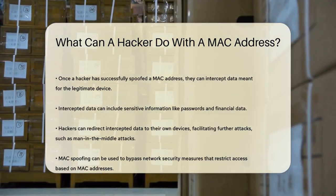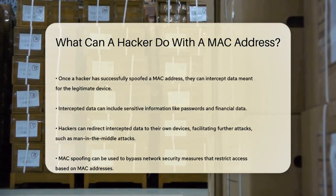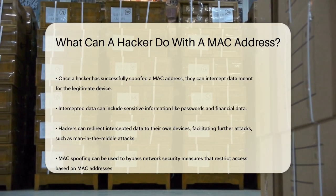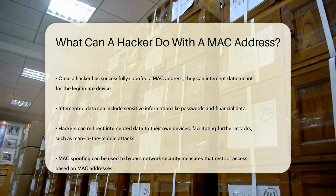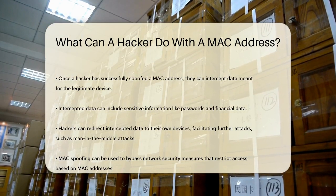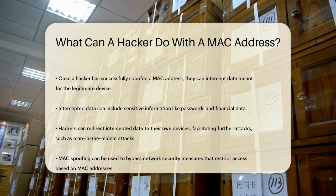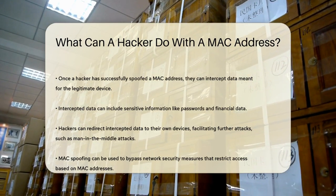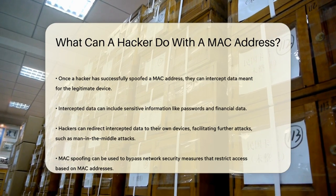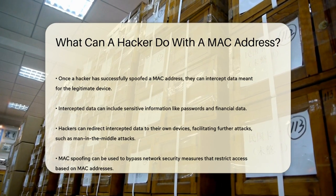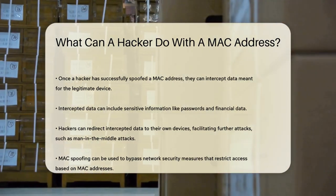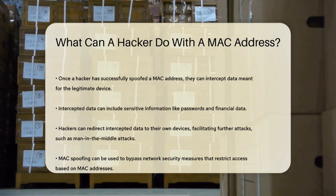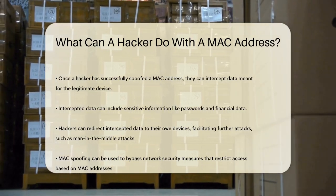Once a hacker has spoofed a MAC address, they can intercept data meant for the legitimate device. This means they can see everything that device is sending and receiving, including sensitive information like passwords or financial data. They can also redirect this data to their own device, allowing them to launch further attacks like man-in-the-middle attacks, where they can alter the data being sent.